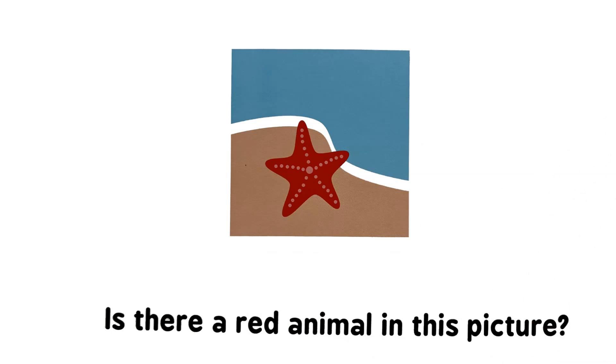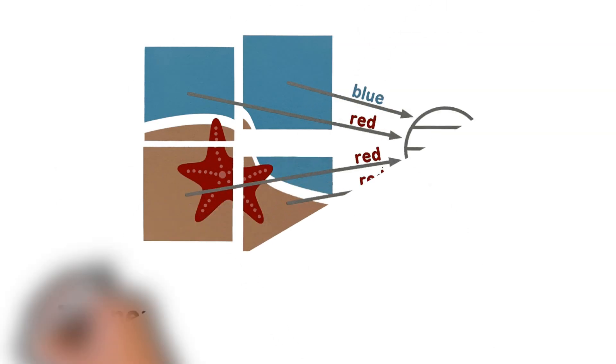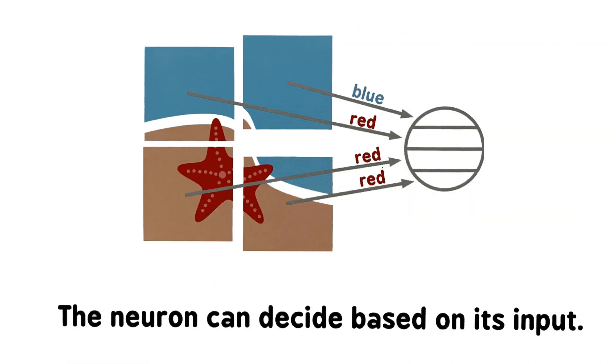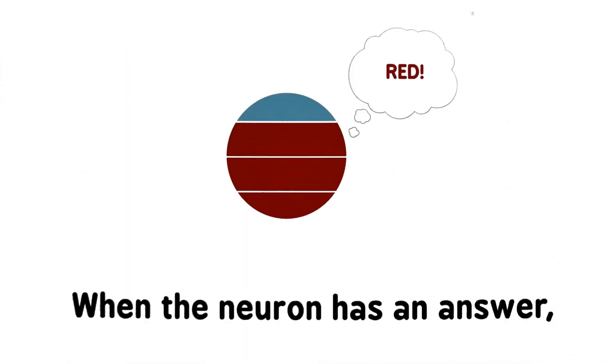Is there a red animal in this picture? The neuron can decide based on its input. When the neuron has an answer, it sends its own message.